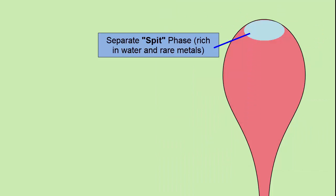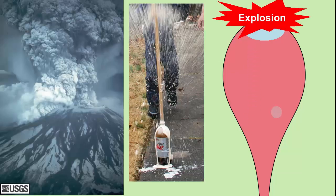What happens to the spit phase if the magma chamber is opened up and the pressure released to the surface? An explosive volcanic eruption occurs in which the liquid is carried upward by the force of the escaping gas. The liquid flash freezes to form ash and is thrown high into the atmosphere, where winds can carry it potentially thousands of miles away. This process is similar to what happens when soda is shaken up and then opened. Everything in the spit phase will migrate upwards with the gas and be distributed along with the ash.